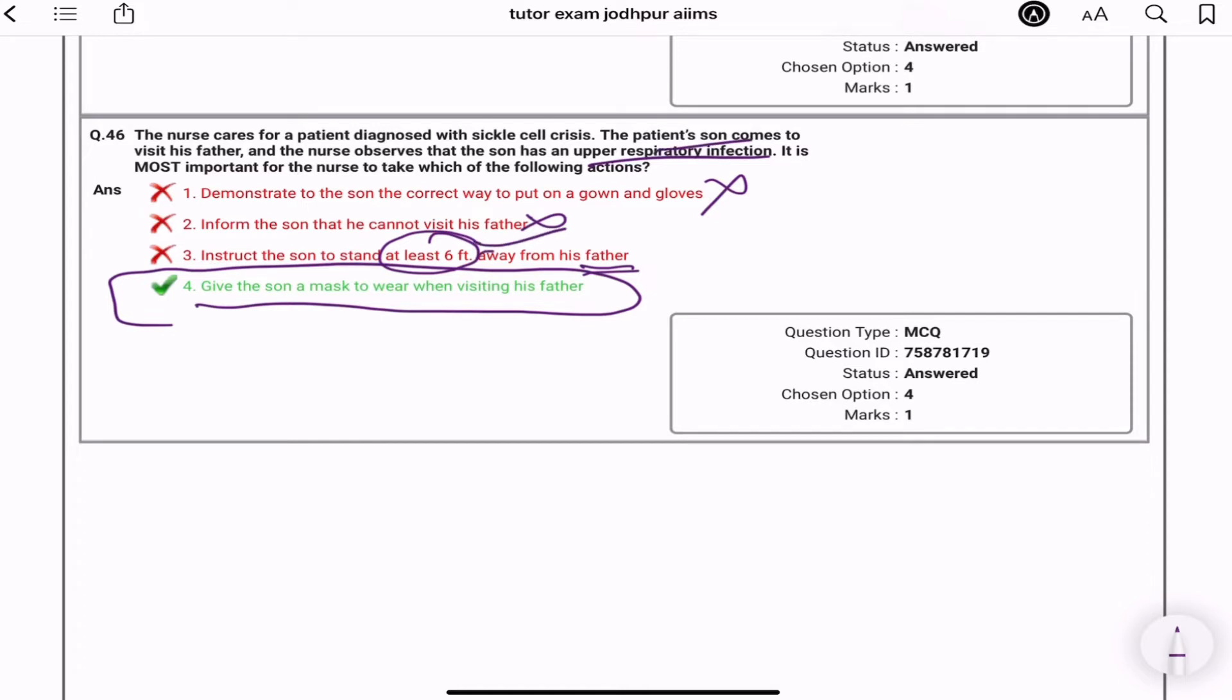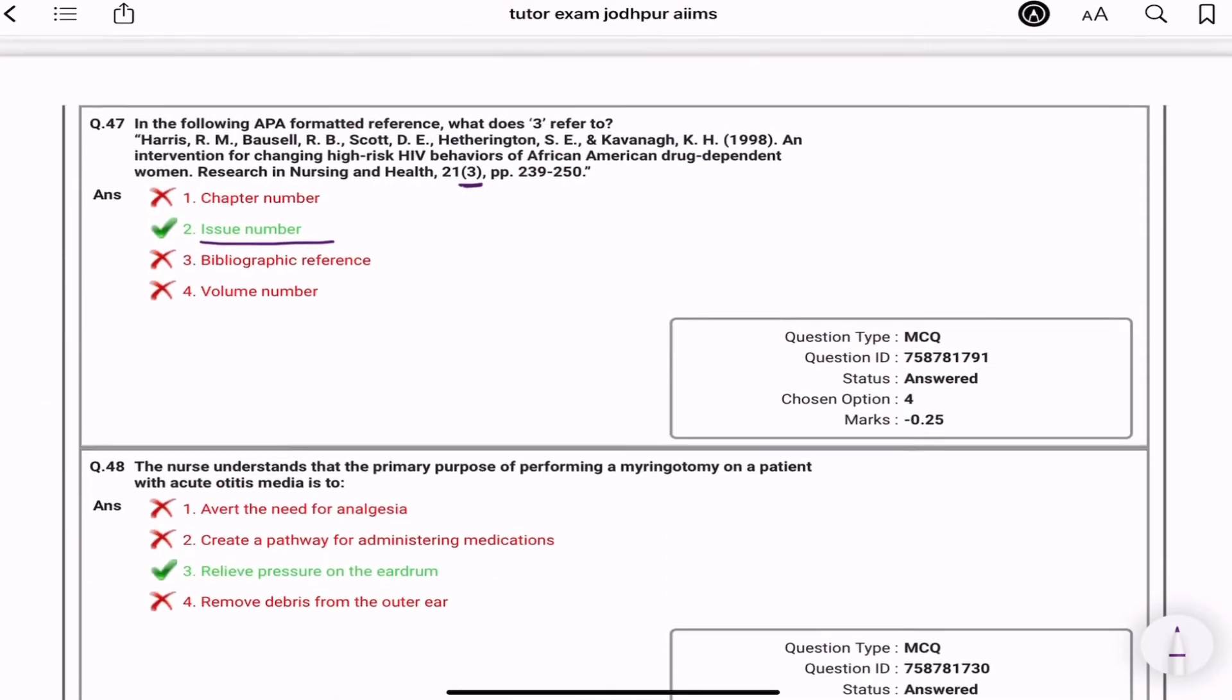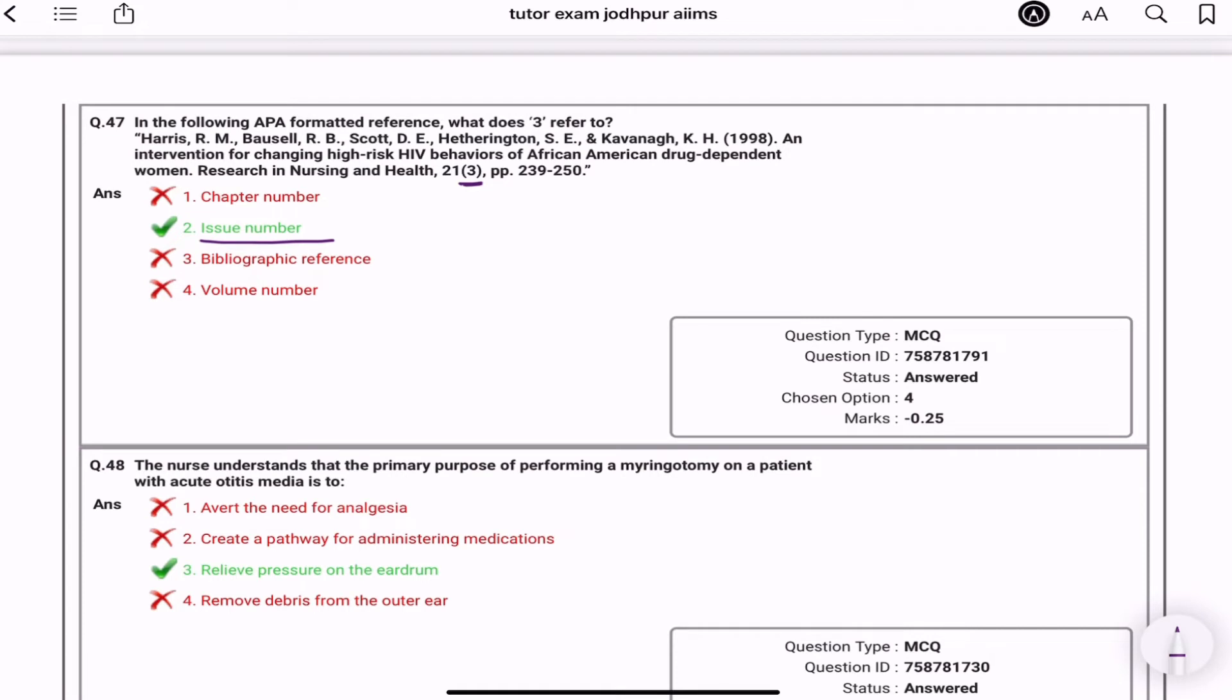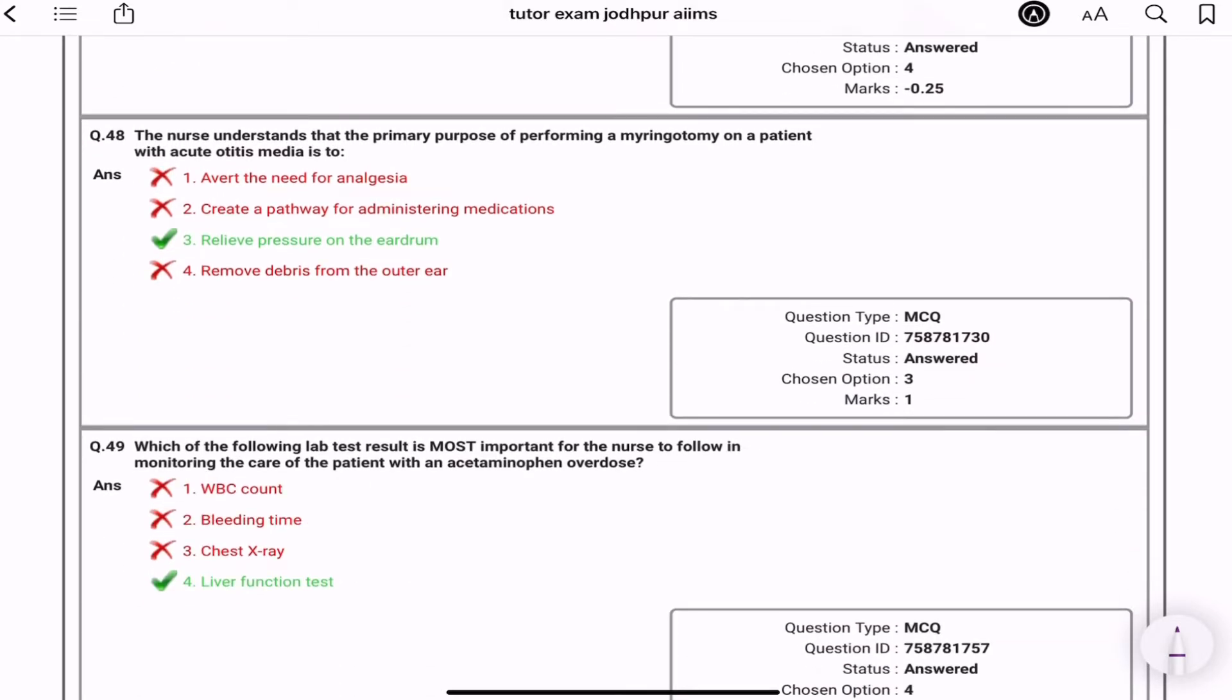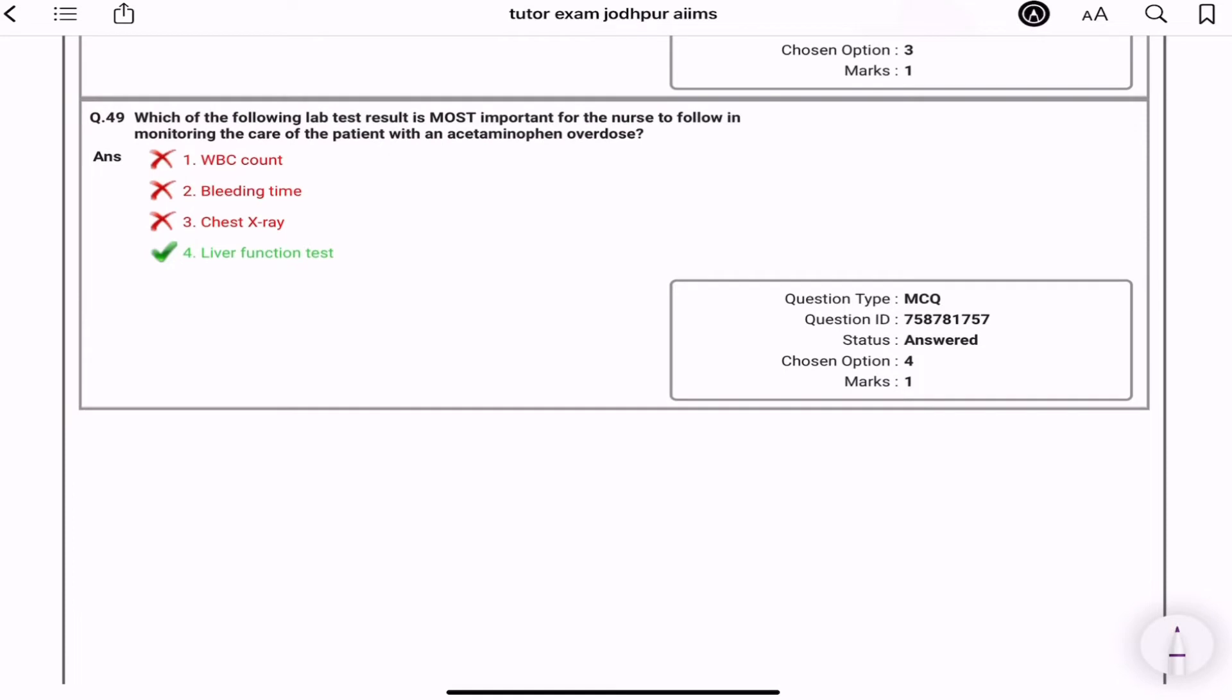In following APA format, what does this three refers to? Issue number. The nurse understand the primary purpose of performing a myringotomy on a patient with acute otitis media is to relieve pressure on the eardrum. Otitis media se bohot question aate hain. Please agar aap ear ka chapter perform learn karta hain to us mein otitis media ko bohot acche se padhe. Which of the following lab test result is most important for the nurse to follow in monitoring the care of patient with acetaminophen overdose? LFT mainly. Aapka liver toxic hai, that means hepatotoxic hai.